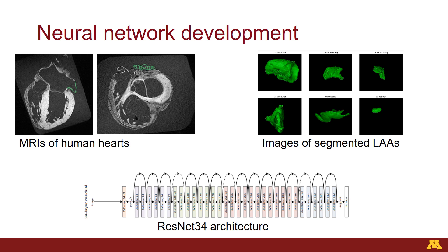We started with MRIs from fixed human hearts available from the Visible Heart Lab, and we segmented out the left atrial appendage, which is what you're seeing in the images in the top left. In the top right is what we imported into our neural network — three-dimensional renderings of the left atrial appendages tagged with their corresponding morphology: cauliflower, chicken wing, or windsock. We didn't have any cactuses available, so those were left out of this dataset.